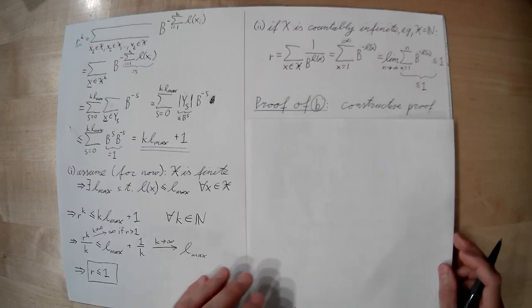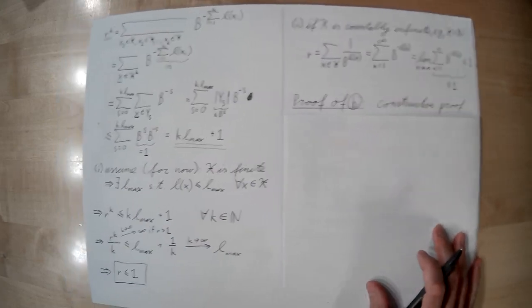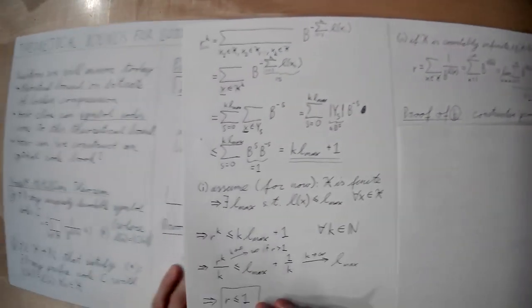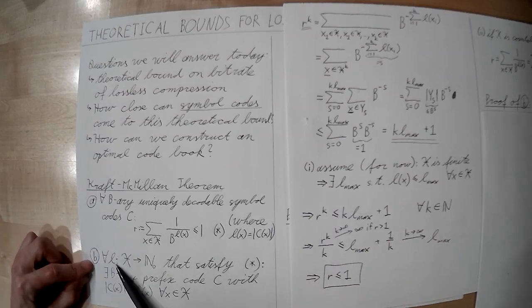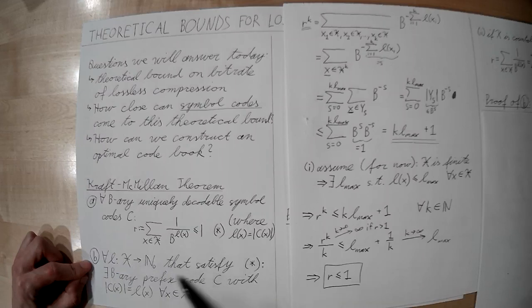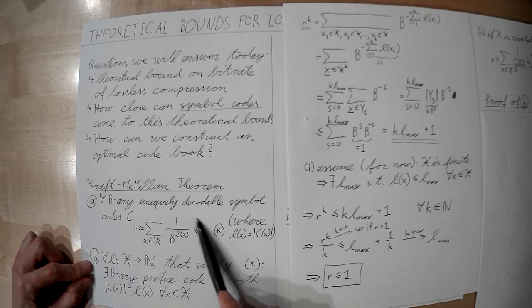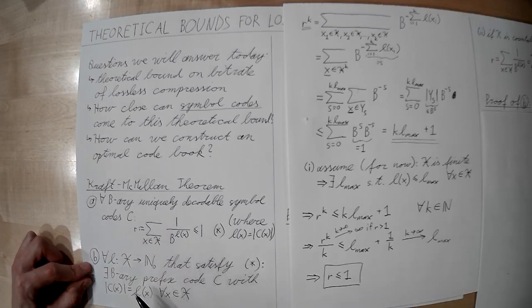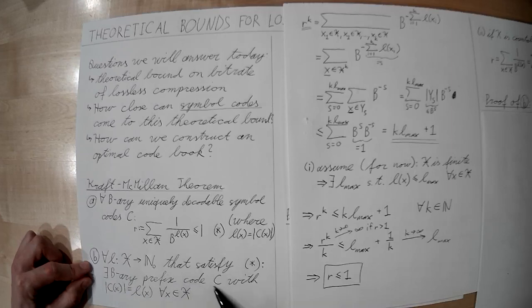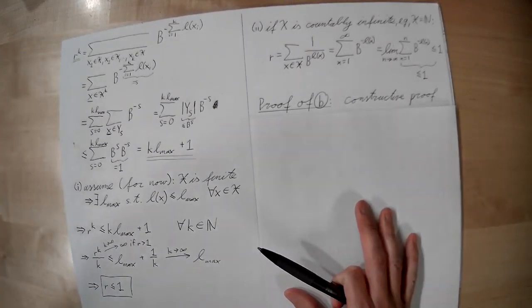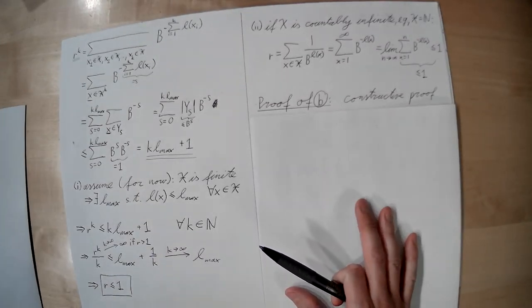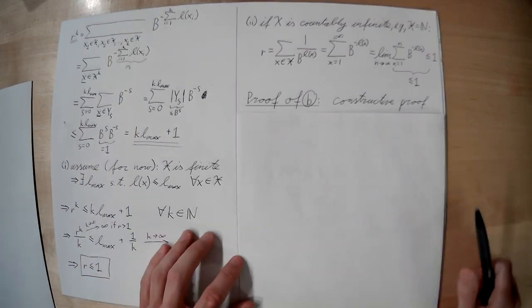This was the proof of part A of the Kraft-McMillan theorem. Part B states something like the inverse. We start from any target codeword lengths L(x) and assume they satisfy the Kraft inequality. We want to show that we can construct a prefix-free symbol code C whose codewords have exactly those given lengths. The nice thing is we can give a constructive proof: not only can we show such a symbol code exists, we can provide an algorithm that constructs it.